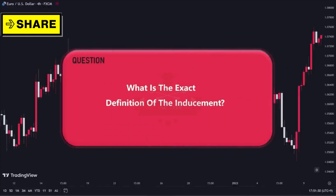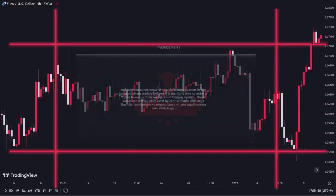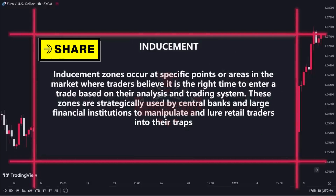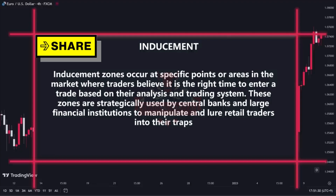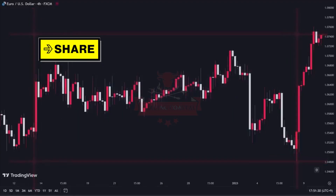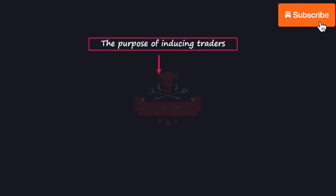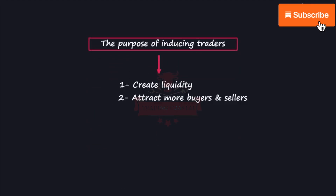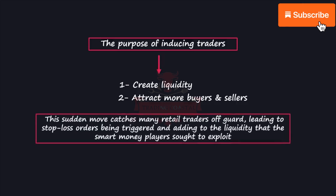What is the exact definition of inducement? Inducement zones occur at specific points or areas in the market where traders believe it is the right time to enter a trade based on their analysis and trading system. These zones are strategically used by central banks and large financial institutions to manipulate and lure retail traders into their traps. The purpose is to create liquidity and attract more buyers and sellers. Once a sufficient number of retail traders have taken positions in the perceived favorable direction, the market is swiftly moved in the opposite direction, resulting in a significant reversal or breakout. This catches many retail traders off guard, leading to stop-loss orders being triggered and adding to the liquidity that smart money players sought to exploit.